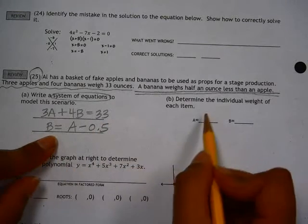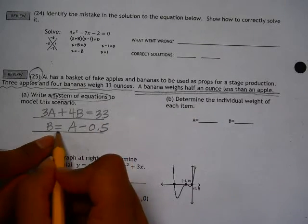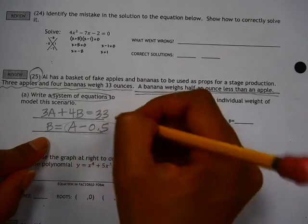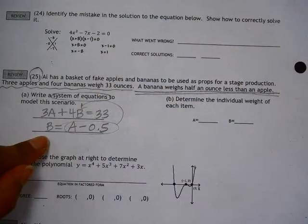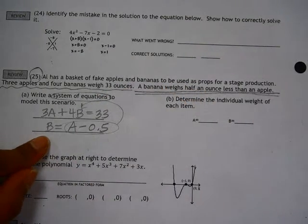So now here, in order to do part B, you can use substitution. So B is equal to this. You can substitute that in place of B, and then continue to solve for A and then B.